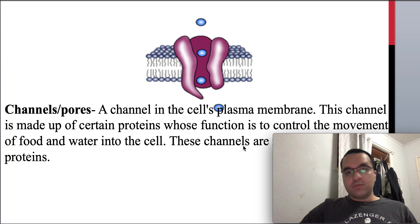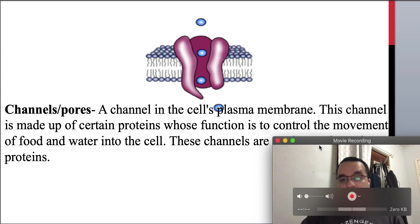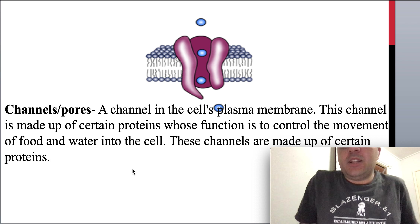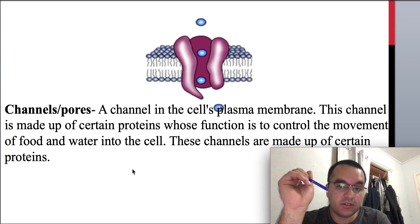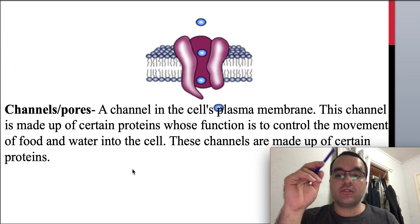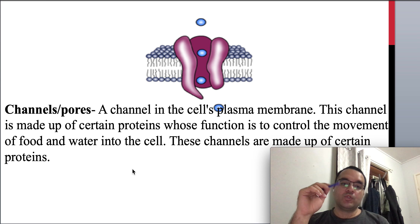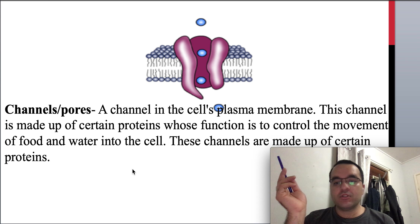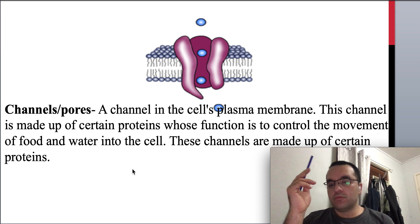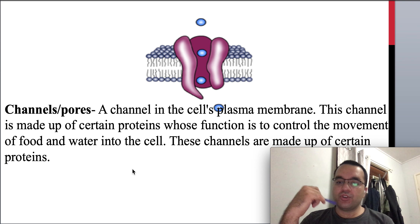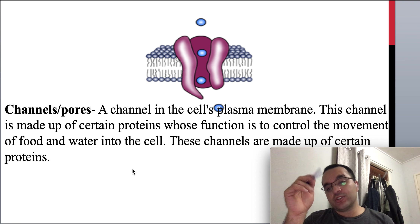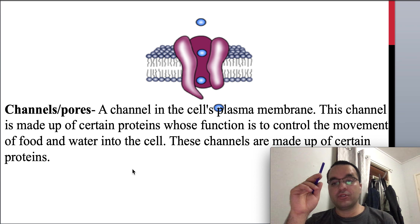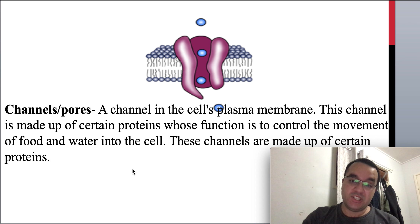The cell membrane, just like the nuclear membrane discussed earlier, also has pores called channels. These channels in the cell membrane are responsible for carrying certain proteins or other molecules across the cell membrane. These pores are responsible for water diffusion, nutrient flow, protein flow, lipid flow, and cell signal flow across the membrane. These channels act like doors through which essential transport between the cell and its surroundings is carried out.